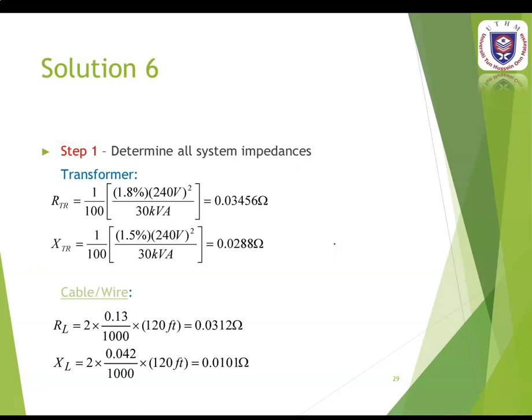For the transformer, you can use the equation: resistance or reactance equals 1 over 100 times the percentage of resistance or reactance of the transformer, times the secondary line voltage squared, divided by the apparent power. For the resistance of the transformer you get 0.03456 ohms, while for the reactance of the transformer you get 0.0288 ohms.